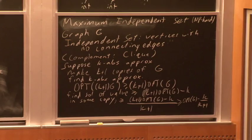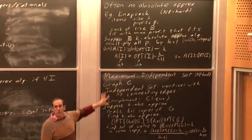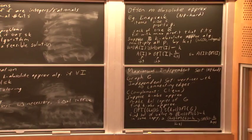What this tells us is that with absolute approximations, we're not going to get very far. Although I've shown absolute approximation hardness for these two separate problems, their true hardnesses are totally different. Knapsack turns out to be incredibly easy to approximate, and independent set turns out to be incredibly hard to approximate. We'll understand that better as we proceed.